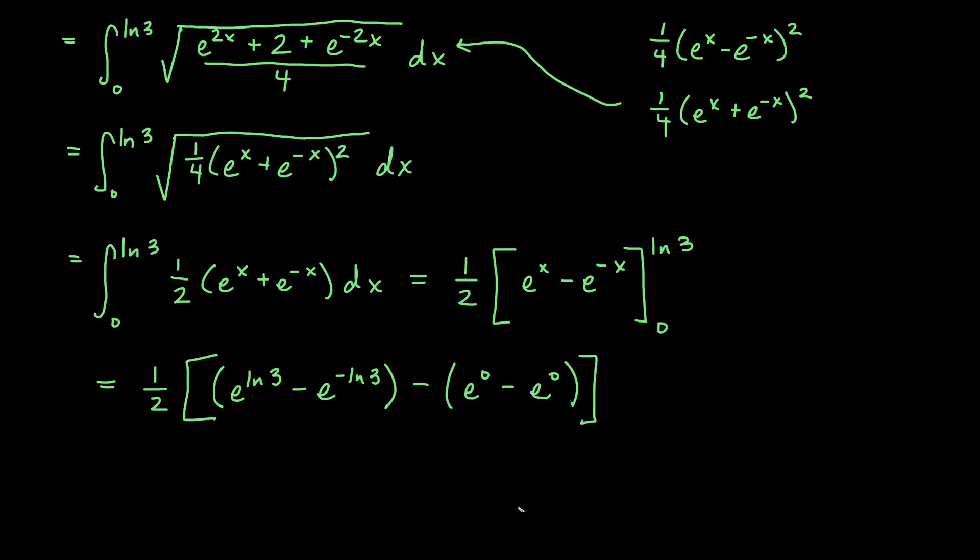All right, and our 1 half is out front. So now just be careful with a couple of the terms. First of all, we know that e to the 0, that's going to be 1. So we get 1 there, and we get 1 there, and that's no problem. And 1 minus 1 is just going to give us 0 for all of this.